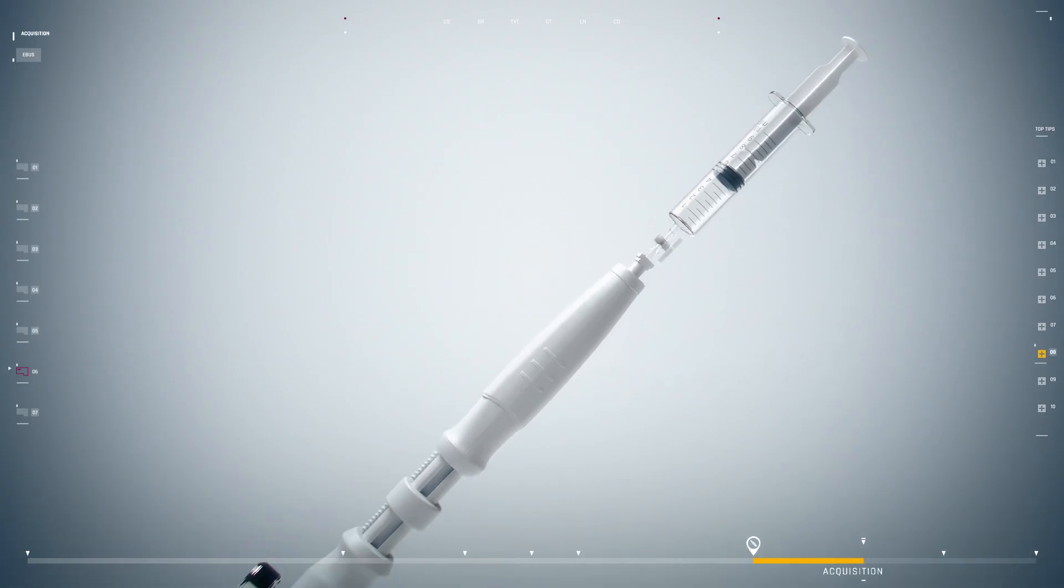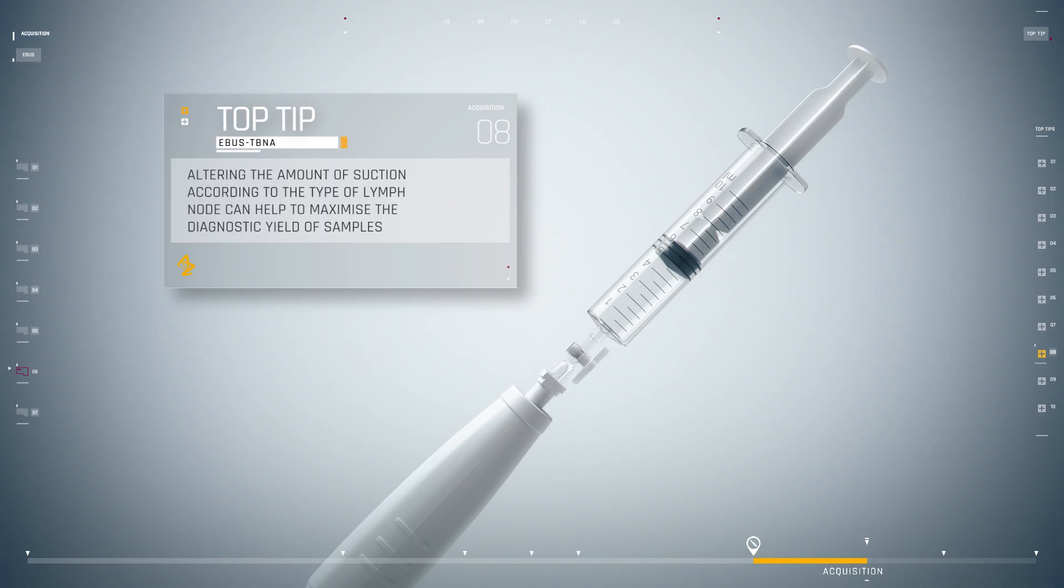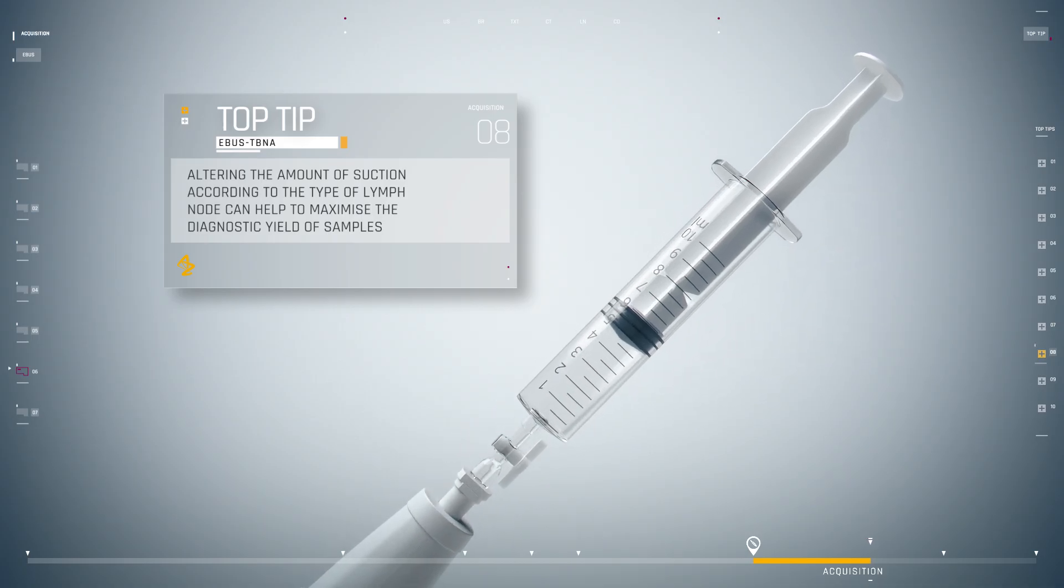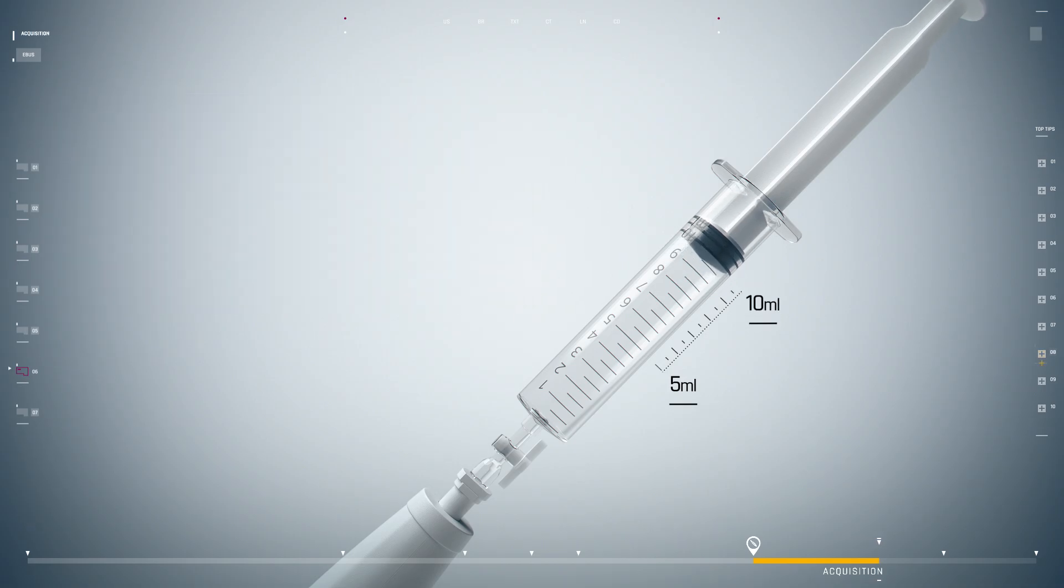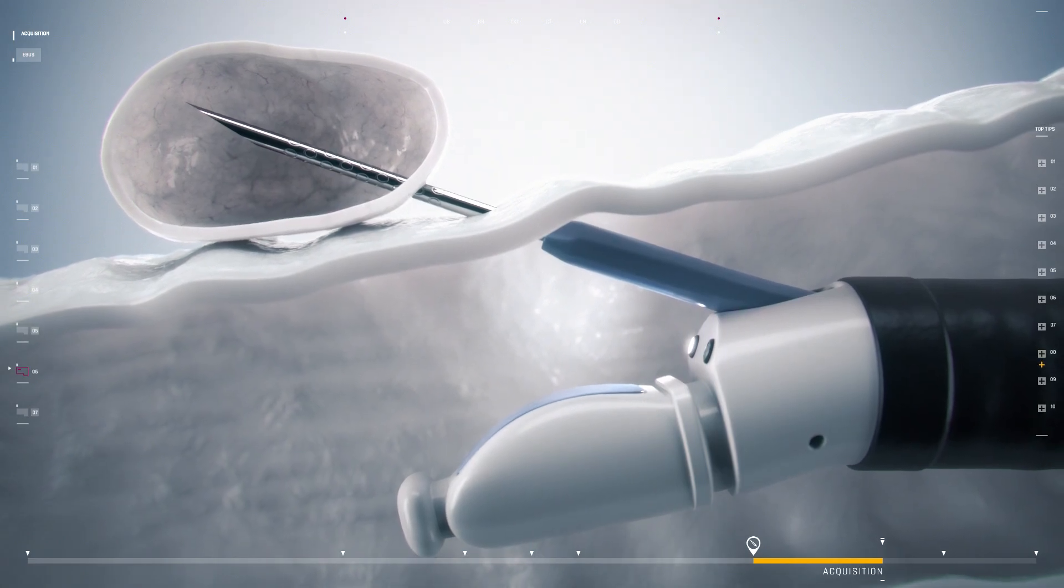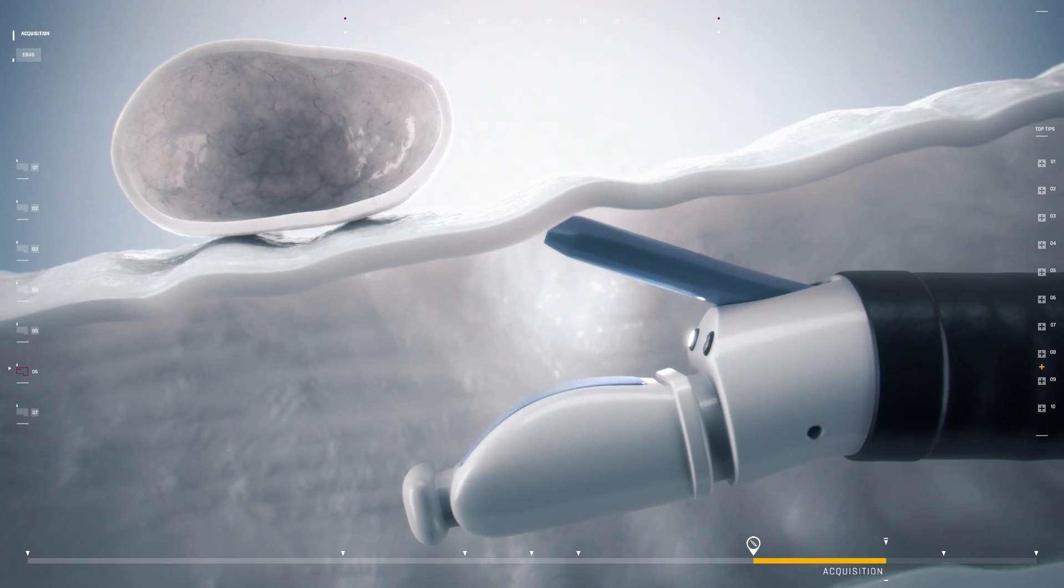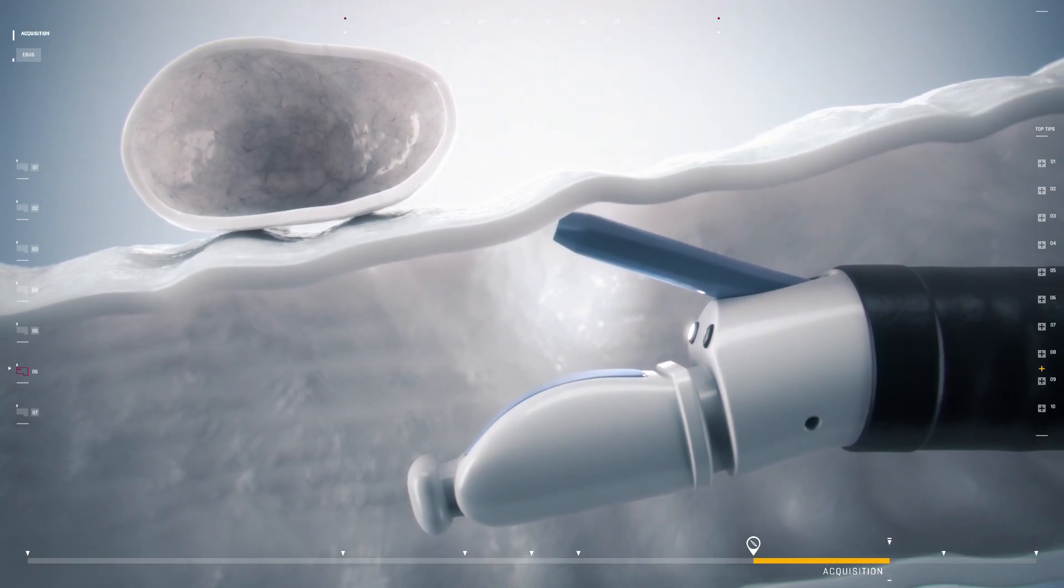The amount of suction should be altered according to the type of lymph node. For example, hard lymph nodes may provide limited samples, and increasing the amount of suction can help to improve diagnostic yield. Suction should be stopped before the needle is retracted into the sheath and locked, then the needle and sheath are removed.